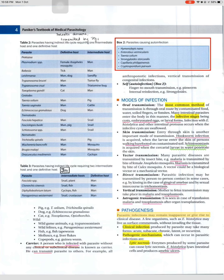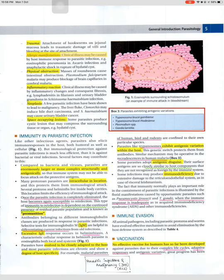Pathogenesis: parasitic infections may remain inapparent or give rise to clinical disease. A few organisms such as E. histolytica may live as surface commensals without invading the tissue. Pathogenic mechanisms include: lytic necrosis — enzymes produced by some parasites, e.g., E. histolytica lyses intestinal cells producing amoebic ulcers; trauma — attachment of hookworms on jejunal mucosa leads to damage of villi and bleeding; allergic manifestations — e.g., eosinophilic pneumonia in Ascaris infection, anaphylactic shock in rupture of hydatid cyst; physical obstruction — masses of roundworm cause intestinal obstruction; Plasmodium falciparum may produce blockage of brain capillaries in cerebral malaria; inflammatory reaction leading to fibrosis — e.g., lymphadenitis in filariasis, urinary bladder granuloma in Schistosoma haematobium infection; neoplasia — Clonorchis sinensis may induce bile duct carcinoma, S. haematobium may cause urinary bladder cancer; space-occupying lesions — e.g., hydatid cysts.